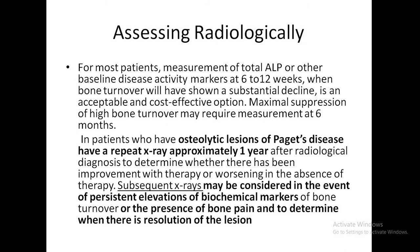For radiological assessment, in most patients, measurement of total ALP or other baseline disease activity markers at 6 to 12 weeks — when bone turnover will show a substantial decline — is an acceptable and cost-effective option. Maximal suppression of high bone turnover may be measured at 6 months. Patients with osteolytic lesions should have a repeat X-ray approximately 1 year after radiological diagnosis to know whether there has been improvement or worsening. Subsequent X-rays can be taken if there is persistent elevation of biochemical markers, presence of bone pain, or if resolution of the lesion needs to be confirmed.